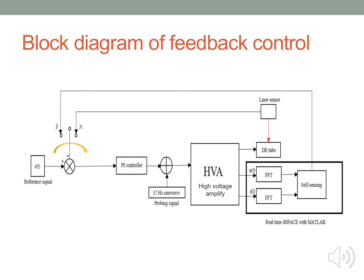Next, I will use the self-sensing signal as a feedback signal to control the input voltage to the dielectric elastomer actuator. The left-hand side is the reference signal, which is the displacement I want the DE tube to move. Then, I use the PI controller to control the input voltage based on the error between the value of the reference signal and the feedback signal. The probing signal was used for the self-sensing model.